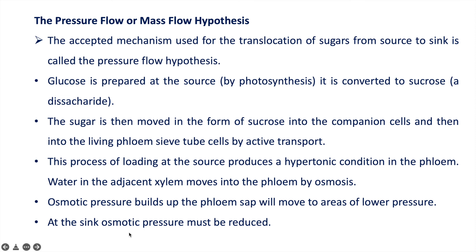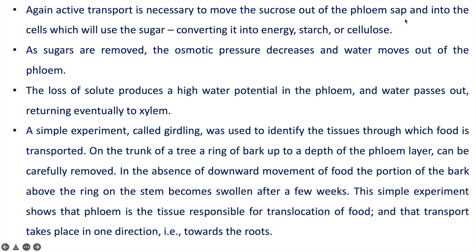At the sink, osmotic pressure must be reduced. The phloem sap delivers food to the cell where it is required, and at that cell, phloem sap unloads its sugar component through active transport. The removal of sugar from phloem sap results in decreased osmotic pressure, and this loss of solute produces high water potential in the phloem. The water then comes out from the phloem and returns to the xylem.